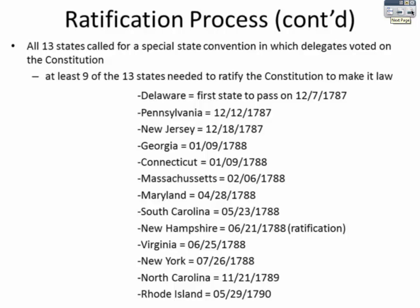At least nine of the 13 states needed to ratify the Constitution in order for it to become law. The first state — Delaware's nickname is 'the first state' — ratified on December 7th, 1787. New Hampshire was the ninth state, and therefore the Constitution became the new government on June 21st, 1788. New York, our state, ratified on July 26th, 1788, and Rhode Island was the last state to ratify on May 29th, 1790.